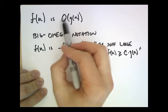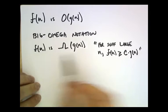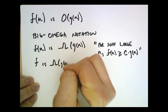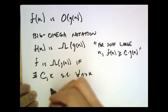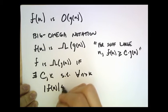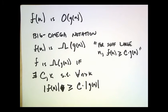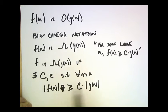Very crudely, big O you can replace with a less than or equal to sign, and big Omega you can replace with a greater than or equal to sign. More precisely, we say that f is big Omega of g of n if there exist constants c and k such that for all n greater than k, the absolute value of f of n is greater than or equal to some constant times the absolute value of g of n. So, for sufficiently large n, f of n is greater than or equal to some constant times g of n.